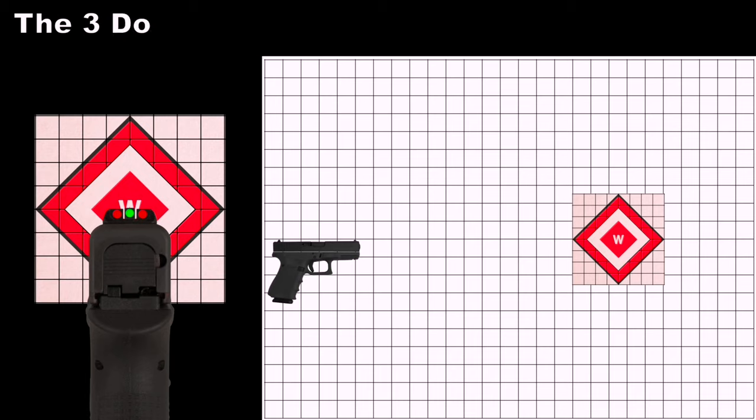Three-dot alignment is effective when using sights that are designed specifically for this aiming method. While maintaining proper sight alignment, center the dot of the front sight post on the center of your target.